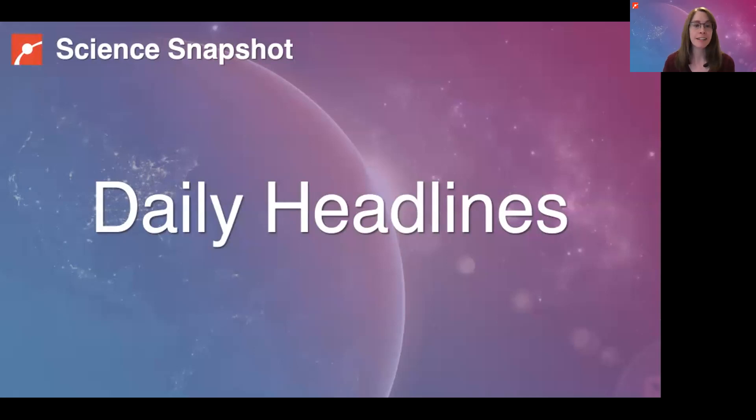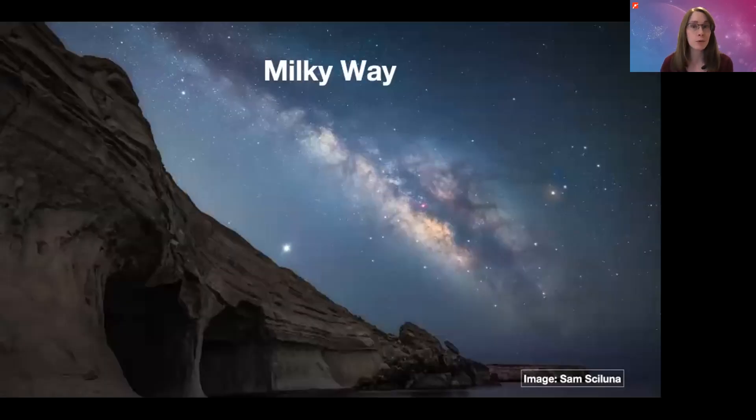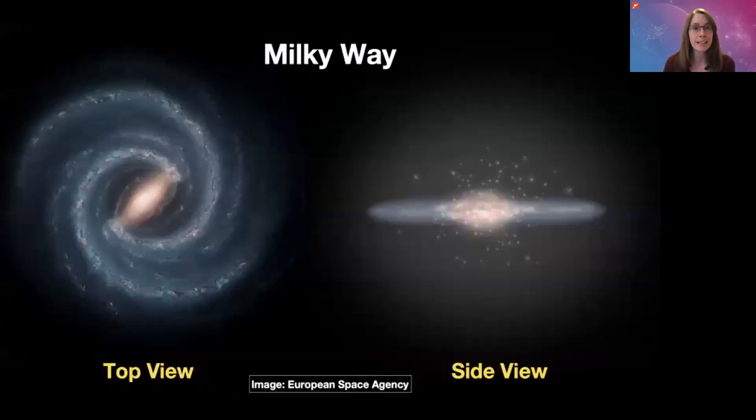When we look up at the night sky, sometimes we get really lucky and we can see the bright band of the Milky Way stretching across the sky. The reason why it looks like this to us on Earth is because we live in the Milky Way galaxy, which is actually a huge collection of stars and dust all gravitationally bound together in this disk shape.